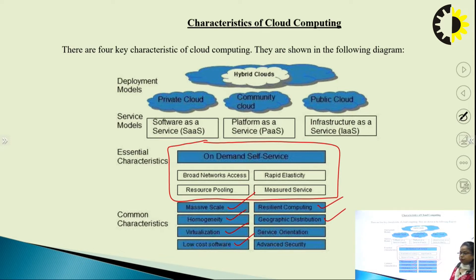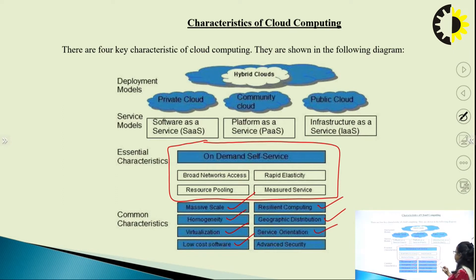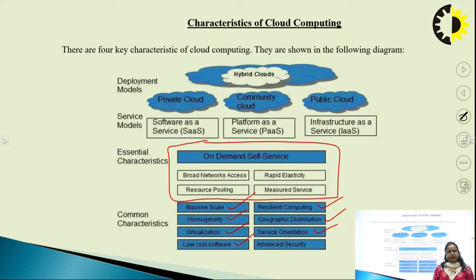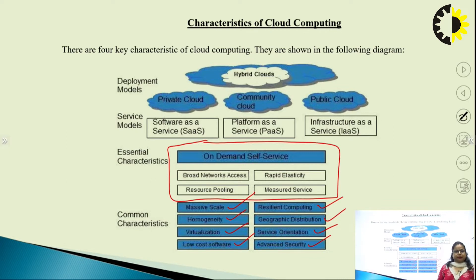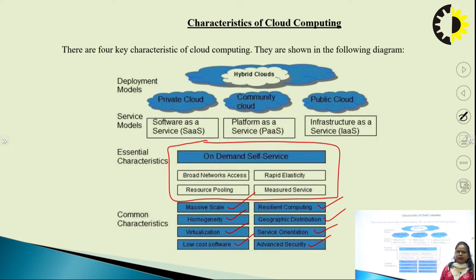We are talking about geographic distribution. As already mentioned, we can access data remotely regardless of geographical location. Then there is service orientation — we have three types of services: public, private, and hybrid. Sometimes data is available publicly, privately, or in a hybrid mode. Then there is advanced security. Whenever data is accessed through cloud computing, we can provide security so that our data is in a safe mode.